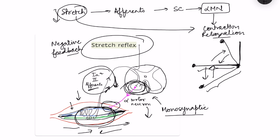Until now we were talking about static stretch only. The dynamic component is the rate of movement — how fast the muscle length is being changed from one position to another. That information is carried by 1A fibers. Type 2 fibers are mainly for static length — what is the current length of the muscle — while 1A fibers report the velocity of change in length. This gives the brain anticipatory information about how fast correction should be done.